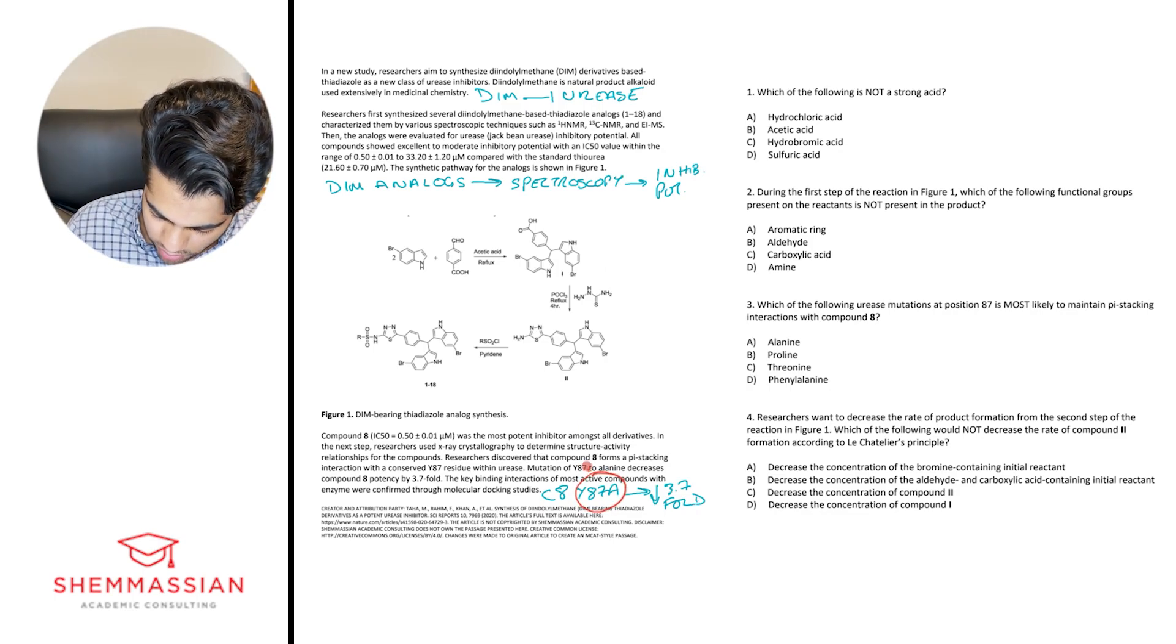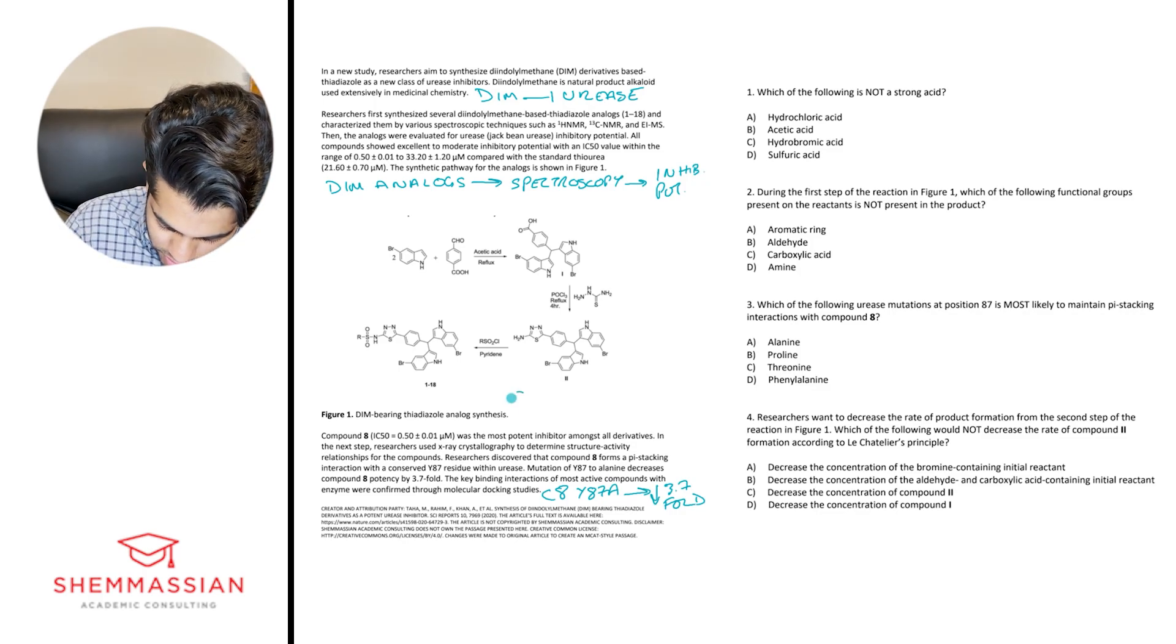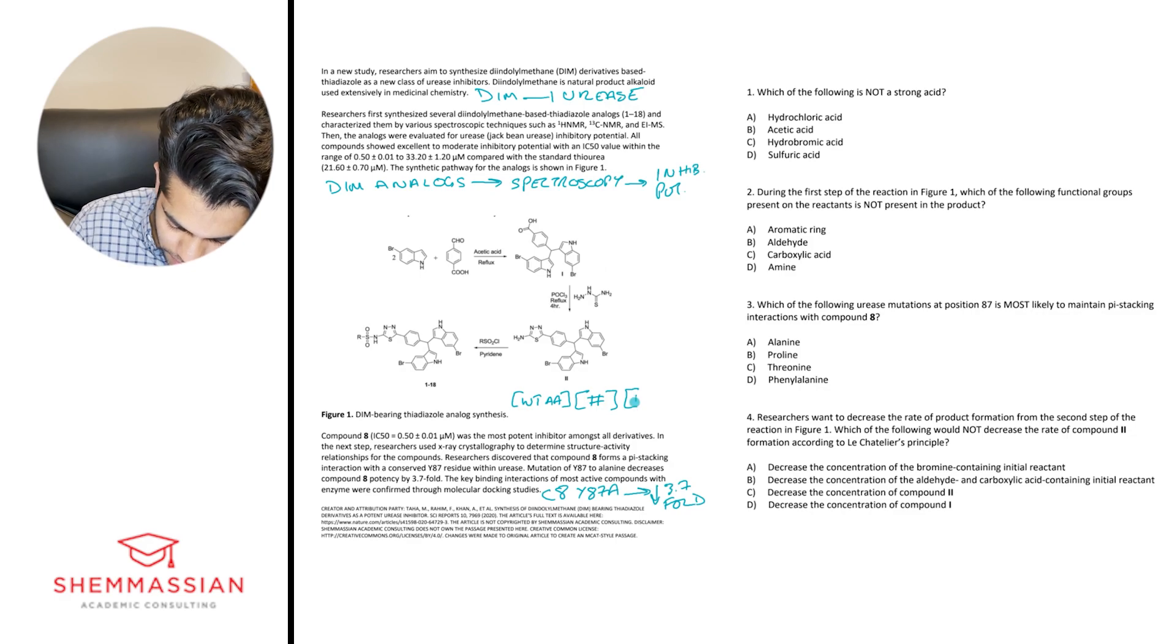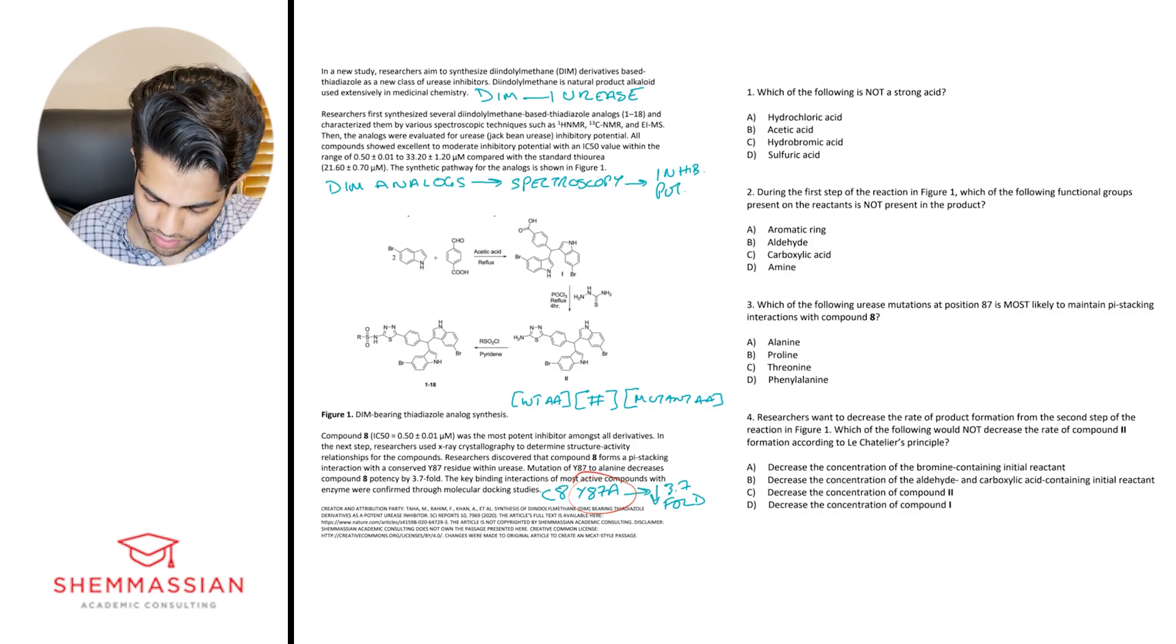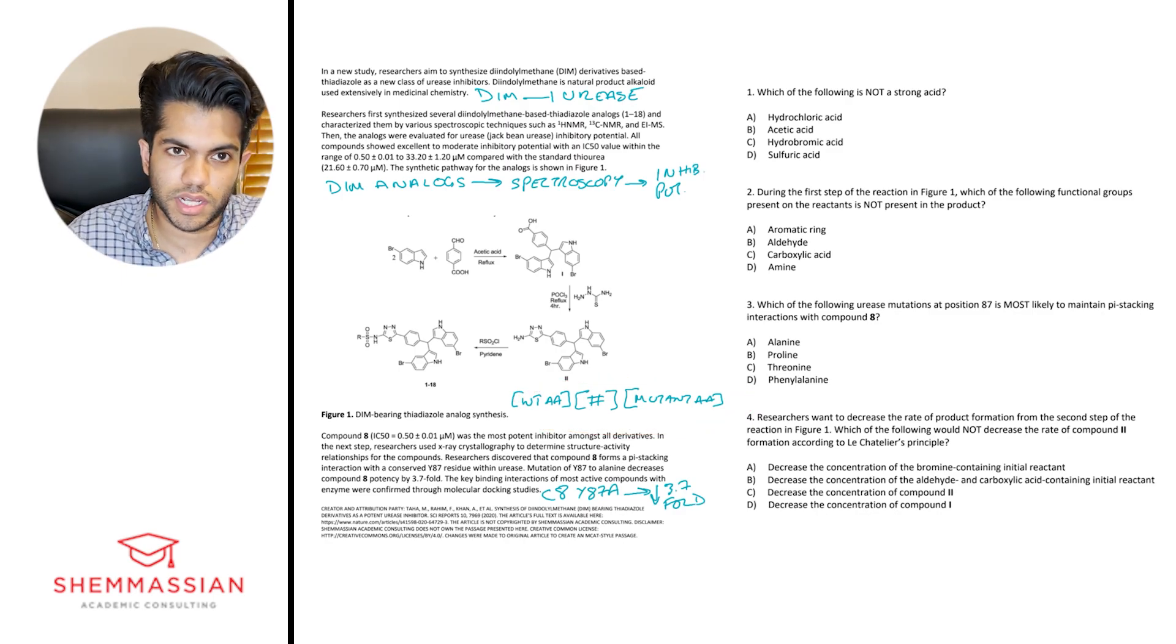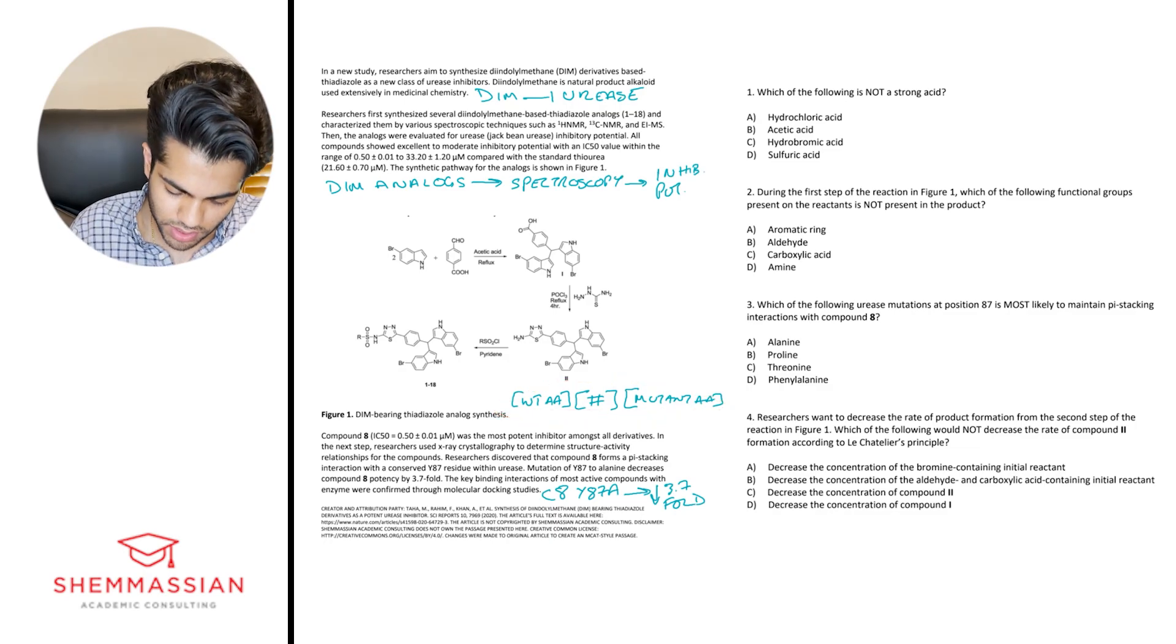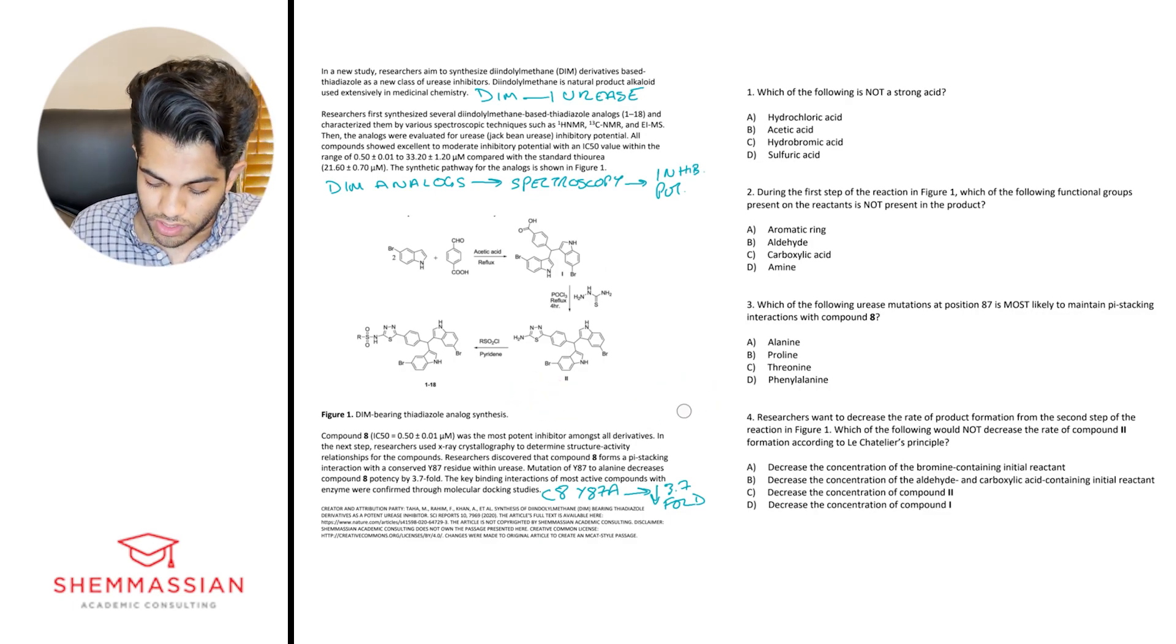So if I had to summarize this, I would write C8 Y87A decrease 3.7 fold. And in case you're not aware the notation for writing out like wild type or mutations for amino acids is basically just you put down the wild type amino acid, its position number, and then the mutant, right? So if we look at this one right here, Y, that's our wild type, 87 is our position number and then alanine here, our A, that's the mutant. Just bringing this up because you'll definitely see this notation a good amount with amino acids, again, being such a high yield topic, mutations with amino acid, you'll see them written out like this. So it's good to know which one is the wild type, which one is the mutant.